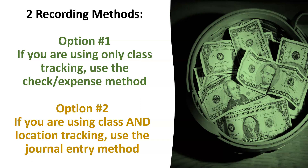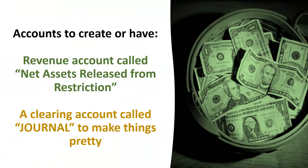Location tracking cannot be applied to line item transactions in QuickBooks Online. In your chart of accounts, you will need to create a revenue account called Net Assets Release from Restriction, and a clearing account called Journal to keep all of your closing entries in one place to make it easier for you to find them. Shout-out to my colleague Megan Tanner, another non-profit pro in my community, for recommending the idea of using a clearing account to keep things pretty.